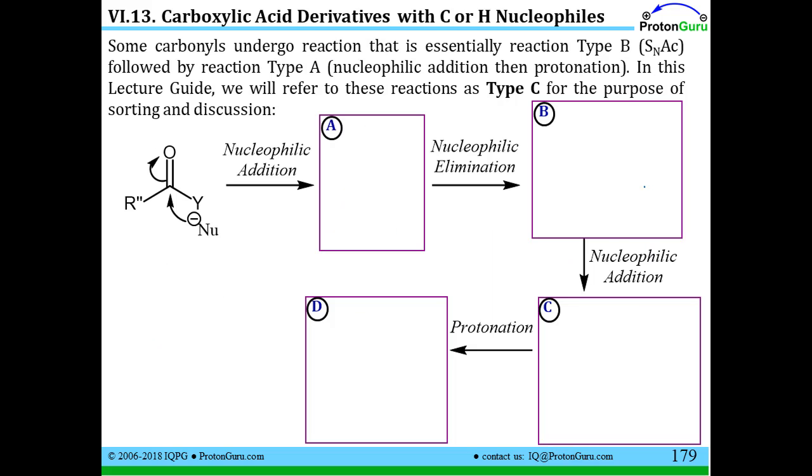Now some carbonyl groups, especially those that react with a more reactive nucleophile, will react by what we call in this book a type C reaction, which means we do a type B reaction, nucleophilic acyl substitution I just showed you, then a type A reaction, which is nucleophilic addition protonation. Let me go through the process mechanistically of how this works.